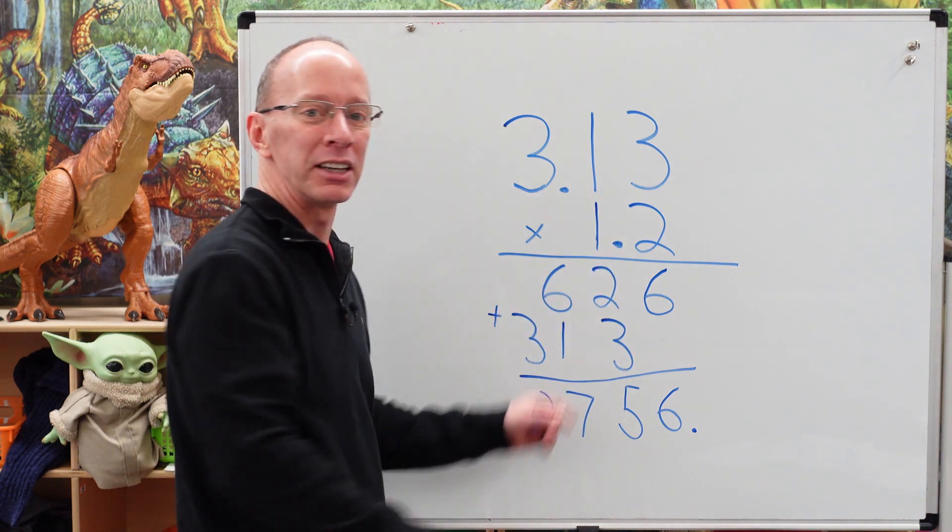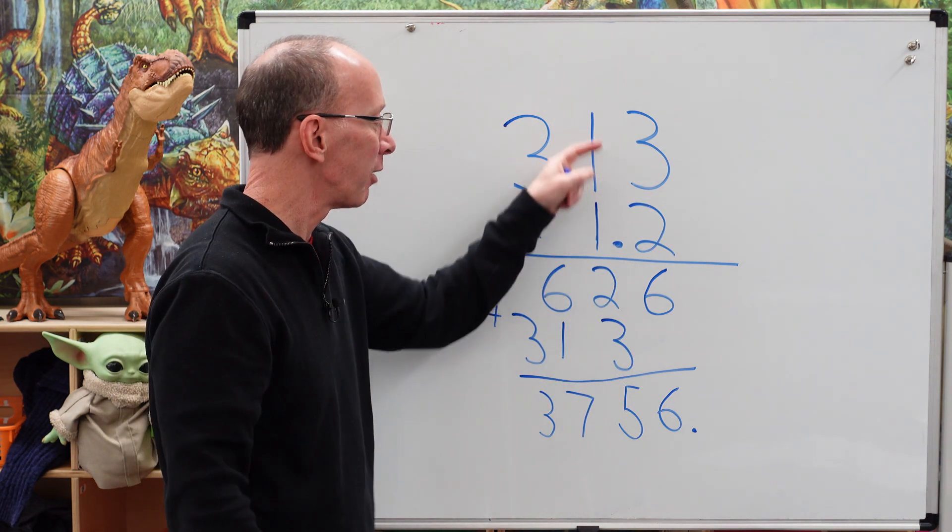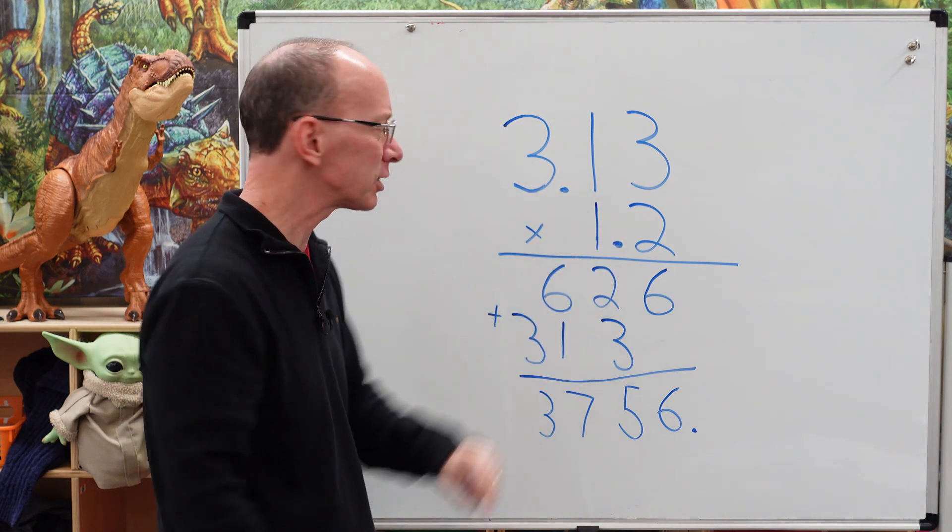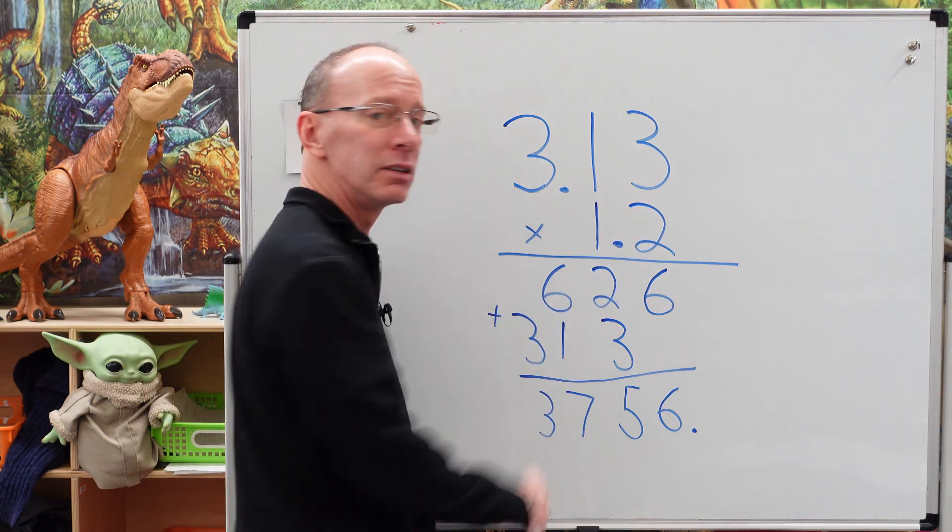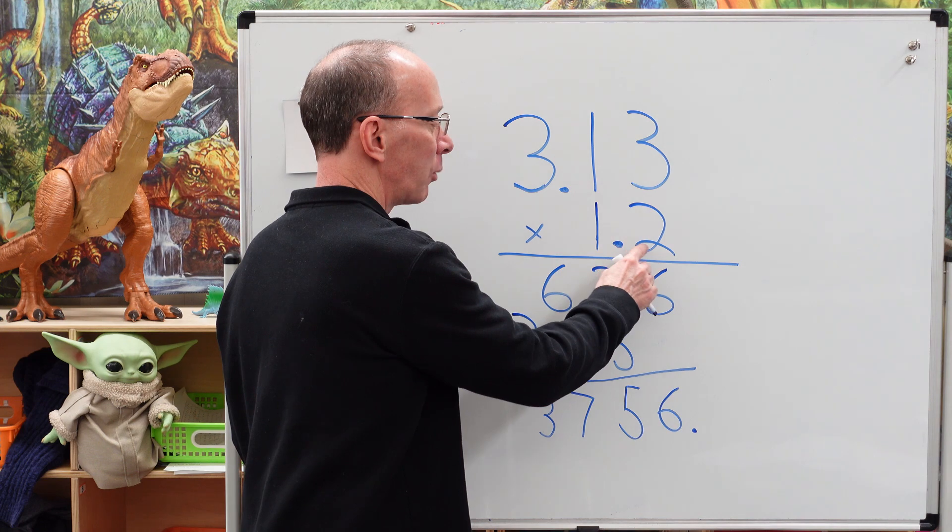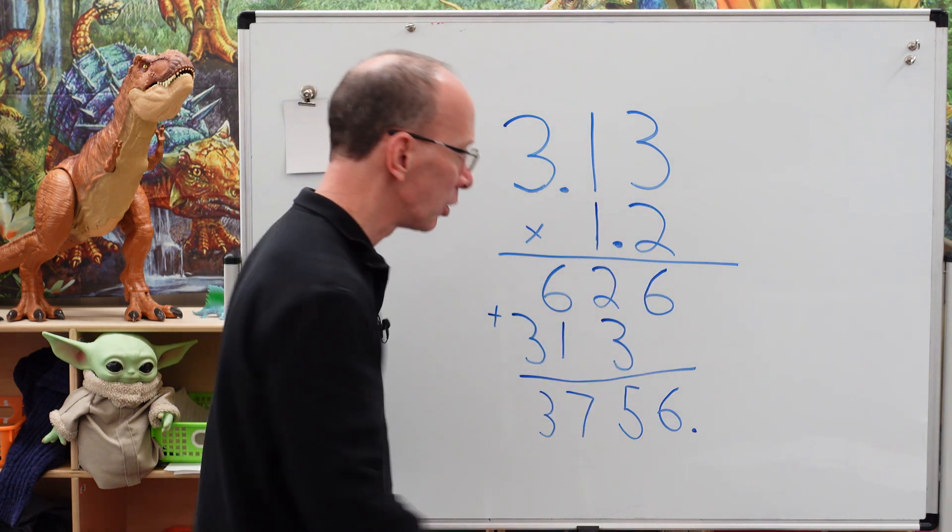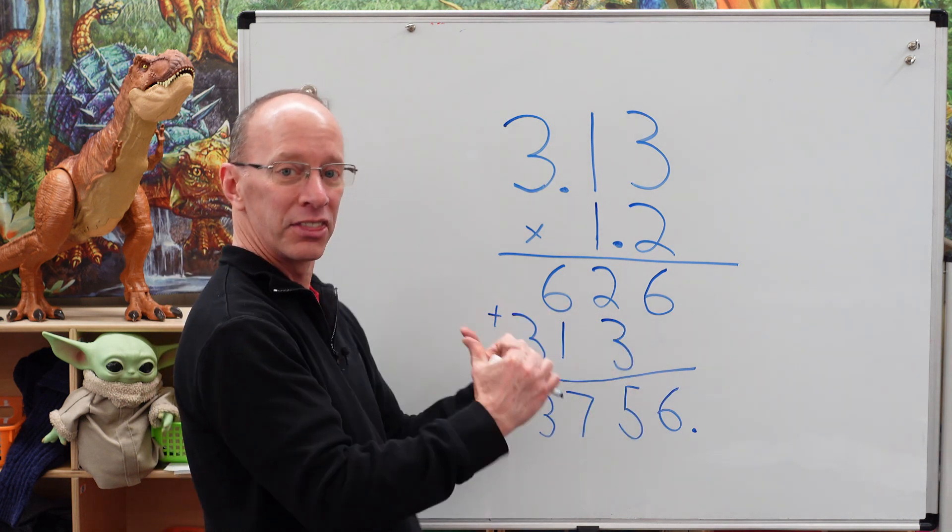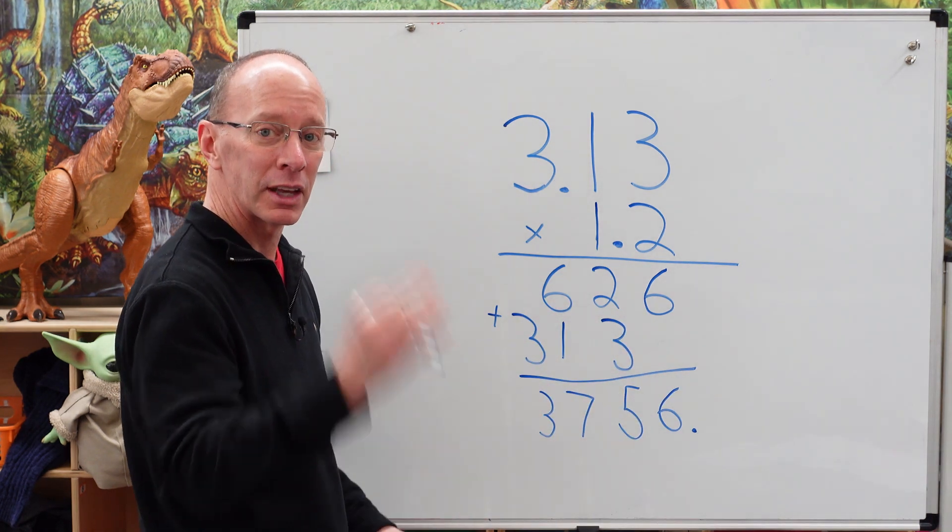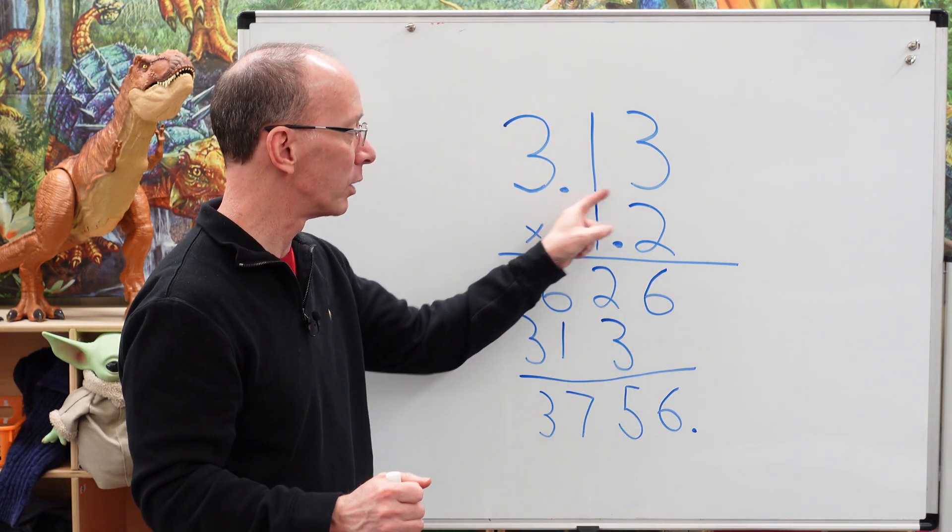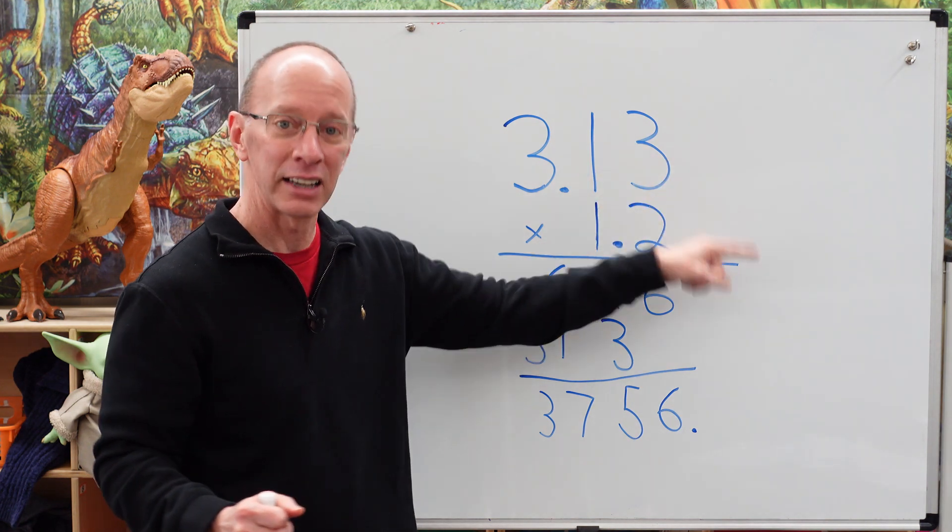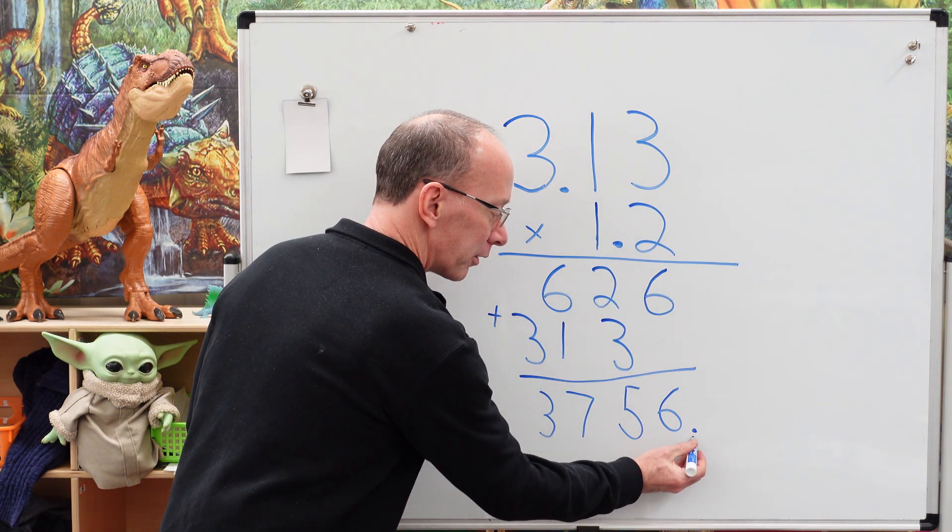We need to count the numbers behind the decimal points in both of these columns. All right. So let's go ahead and do that. We have one, two numbers over here and one right here. So we have one, two, and three numbers. So we need to move the decimal point going this way. How many times? Three times. Because we have one, two, three numbers on that side the decimal point.